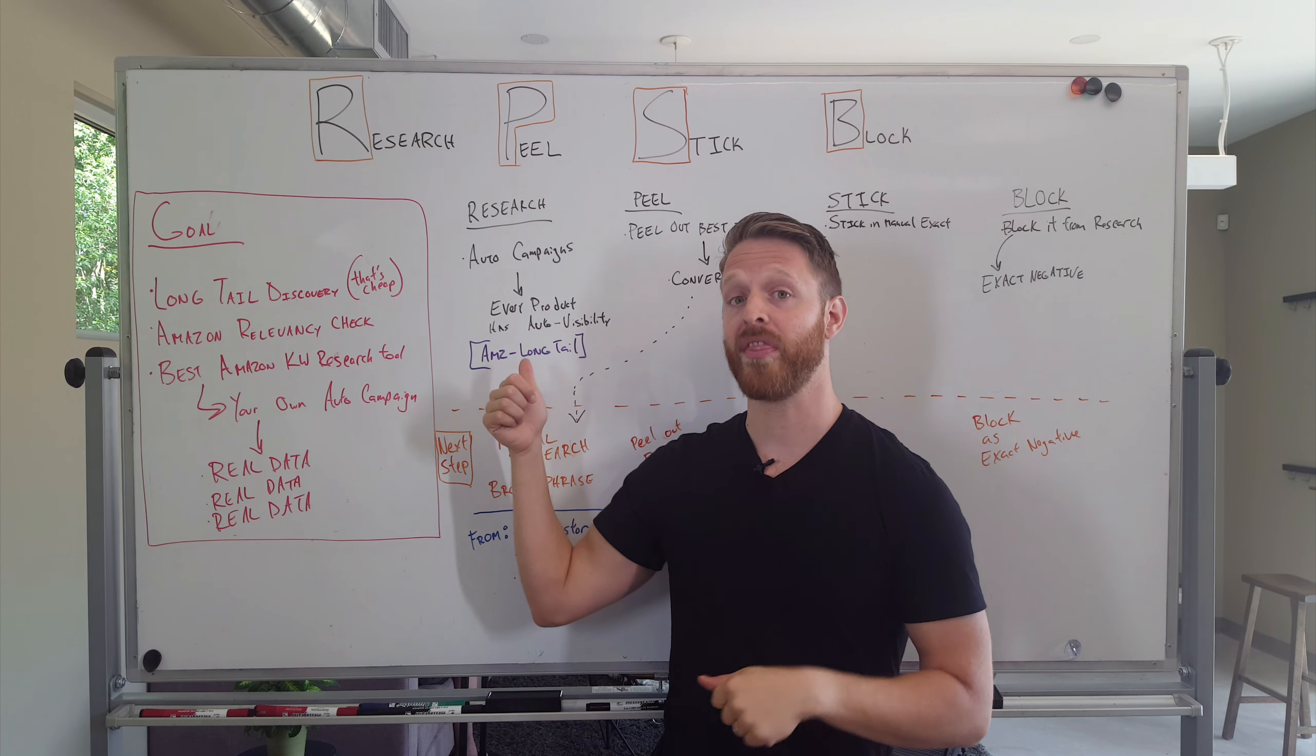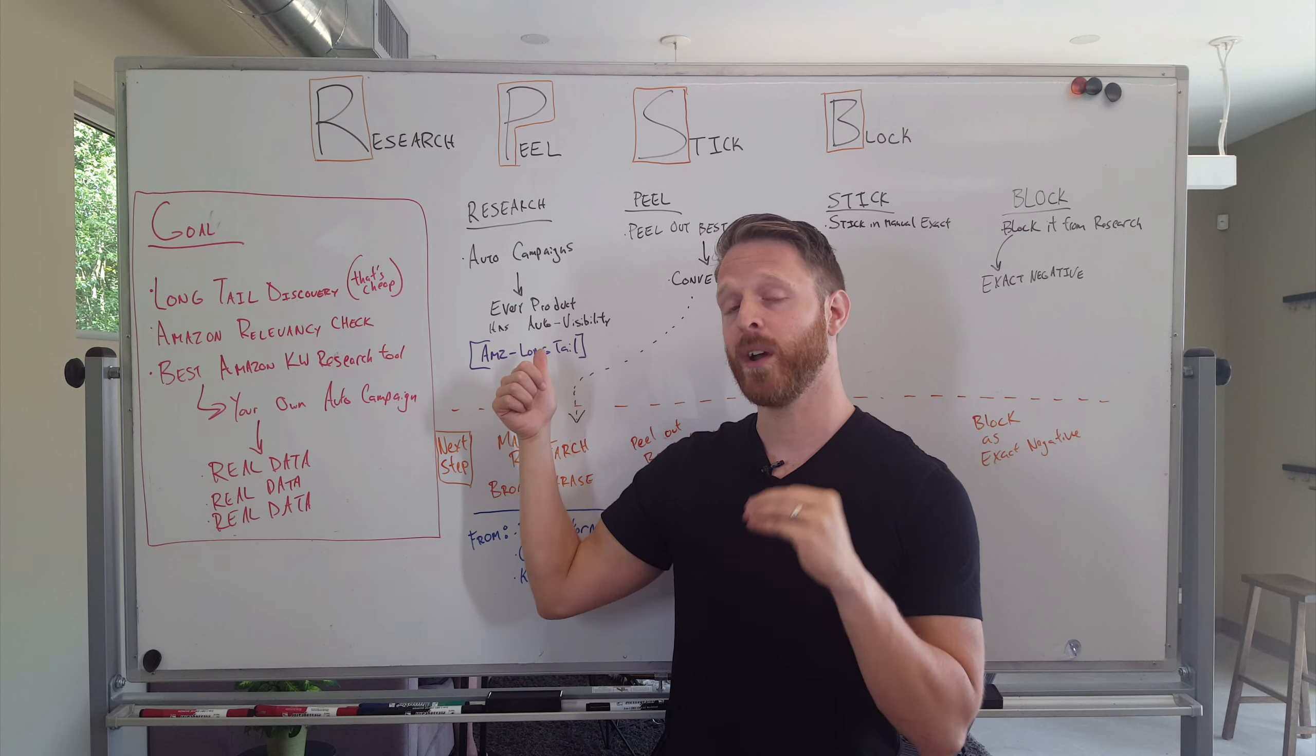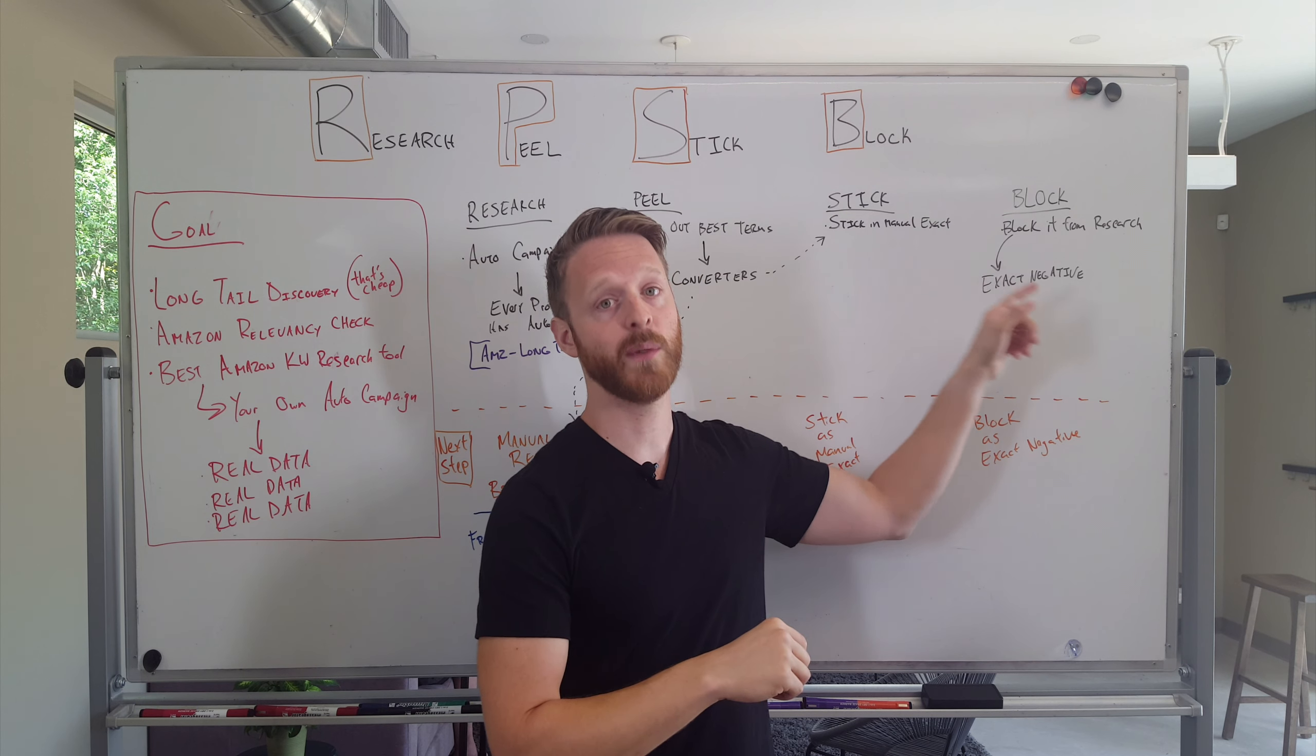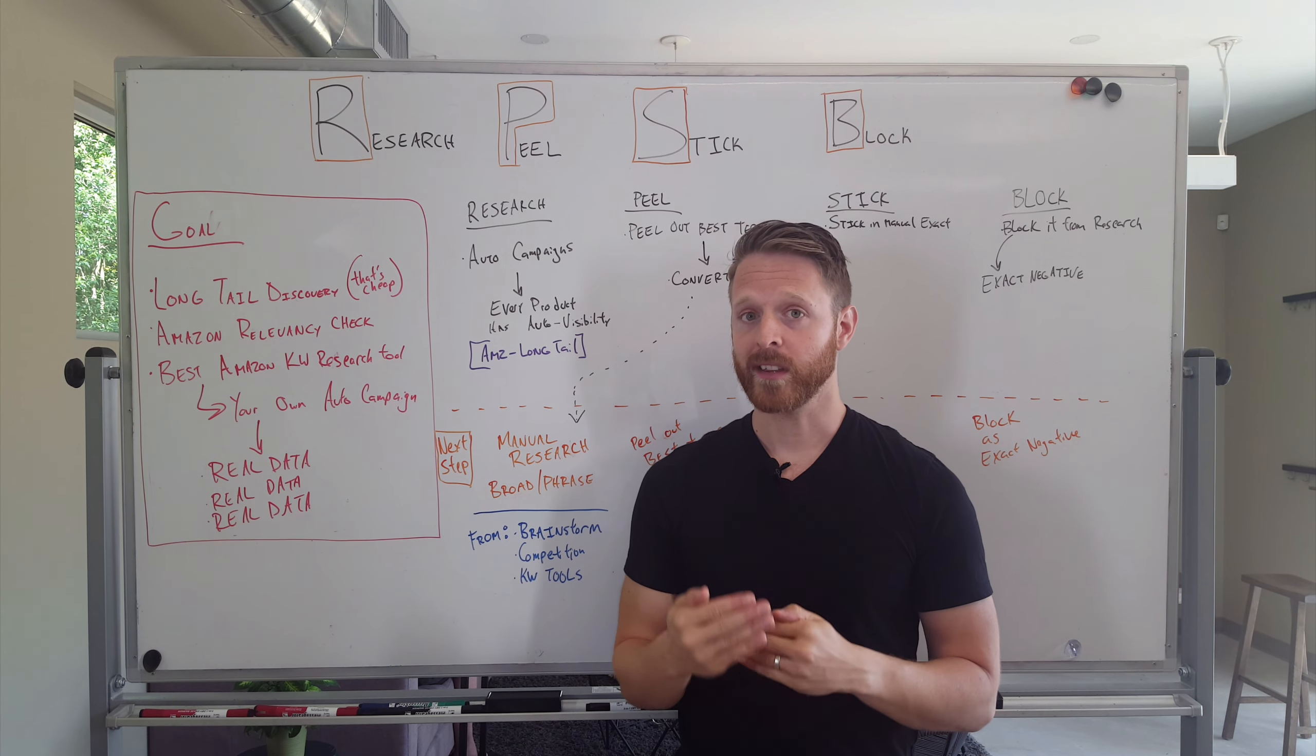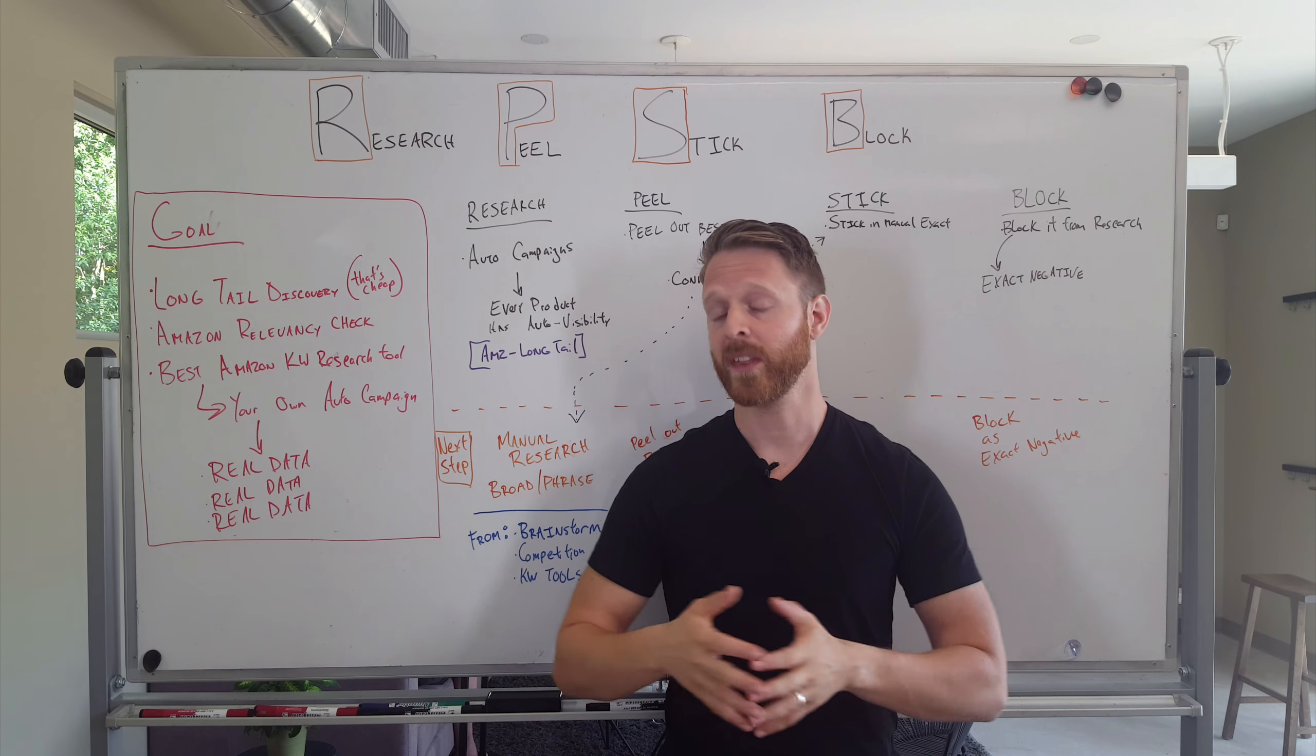Because over here you're just bidding the average on thousands, potentially tens of thousands of terms, which is fine, but you end up bidding the average. We want to bid exactly what this keyword is worth. So that's why we set it over here and then we block it from appearing in the original research campaign. Once you get this down, and you should be doing this, especially if you're new to Amazon PPC, you should be doing this for several weeks if not several months. And you should always have an automatic research campaign.